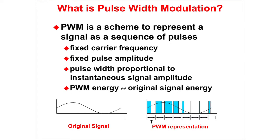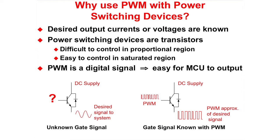Pulse Width Modulation or PWM is a technique used to represent a signal as a sequence of pulses. A PWM waveform has a fixed carrier frequency, fixed pulse amplitude, and the pulse width is proportional to the instantaneous signal amplitude. Power switching devices are difficult to control in the proportional region, but are easy to control in the saturation and cutoff region. Since PWM is a digital signal and easy for microcontrollers to generate, it is ideal for use with power switching devices.